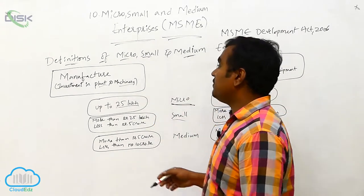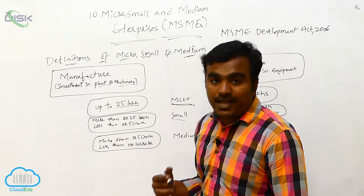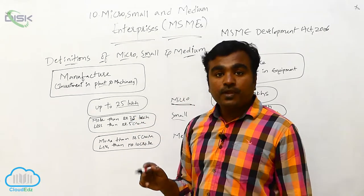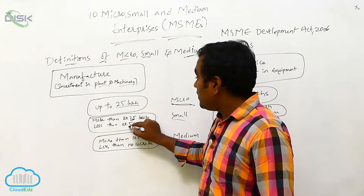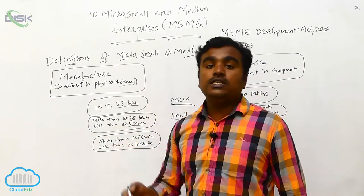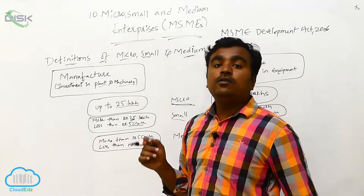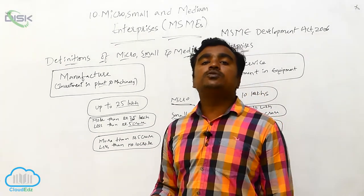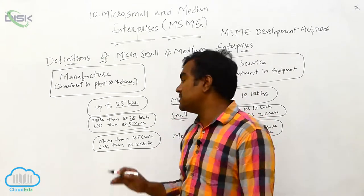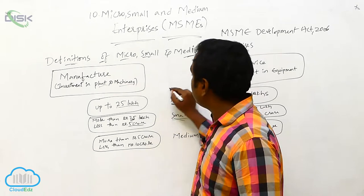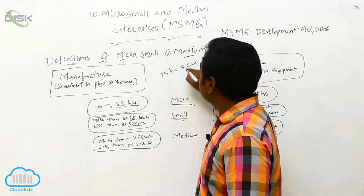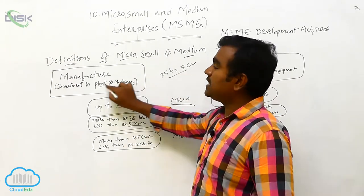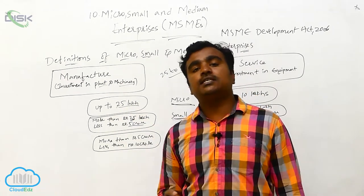Small manufacturing enterprises are those where the investment in plant and machinery is more than 25 lakhs and up to 5 crores. So if investment falls between 25 lakhs and 5 crores, it is considered a small enterprise.